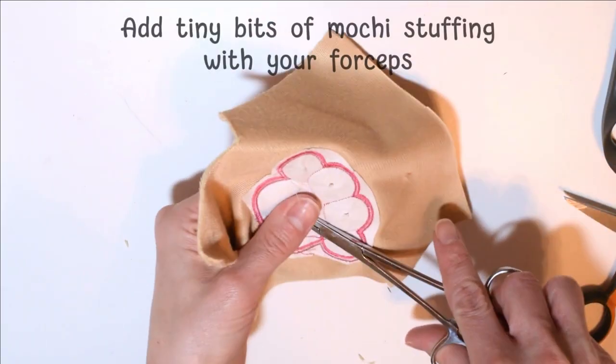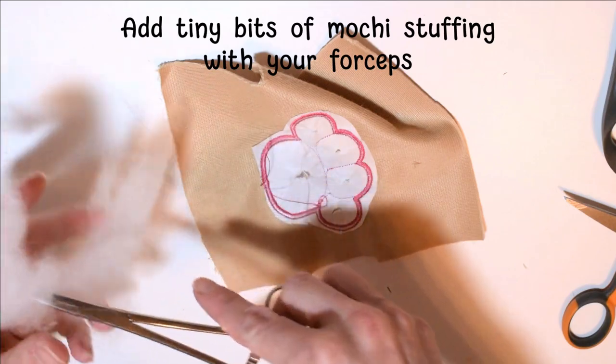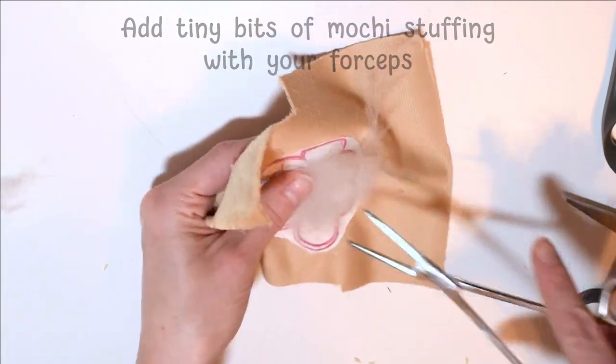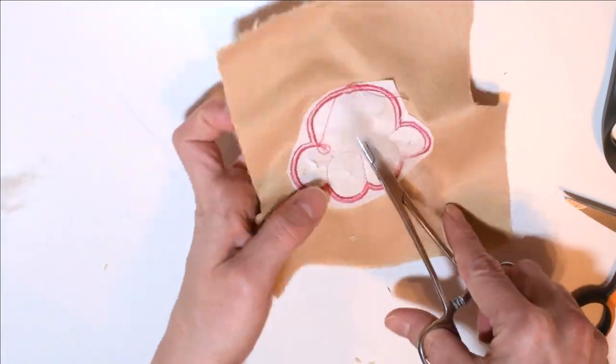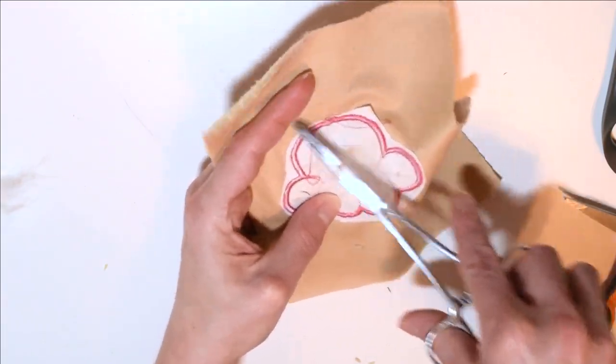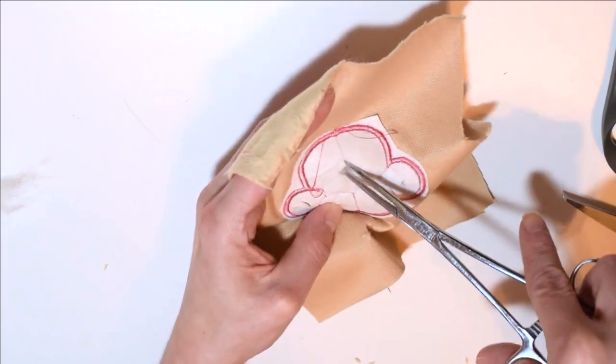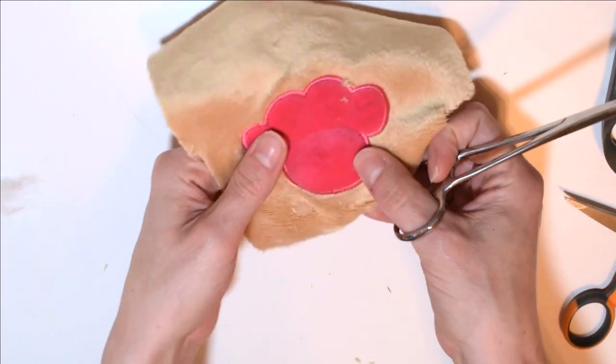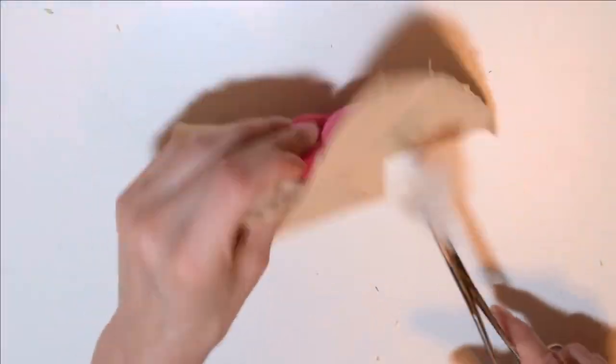Adding the stuffing is a bit difficult and finicky because of how small the hole is. This is why forceps, hemostats, or tweezers are handy. I like to add small amounts at a time. Fill the beans as much as you'd like. The more you add, the bigger they'll get, but they'll also be harder and not as soft and squishy. This pad is a nice balance between shaped and soft.